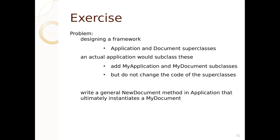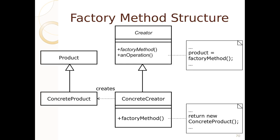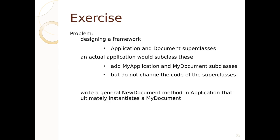Consider this exercise: you want to design a framework. You have application and document superclasses. An actual application would subclass these. You'd have a my application that subclasses an application, and a my document that subclasses document. You cannot change the code of the superclasses. You want to write a general new document method in application that ultimately instantiates a my document. The my document is from document and the my application is from application. Consider a factory method — try to build a factory method that adheres to this pattern.